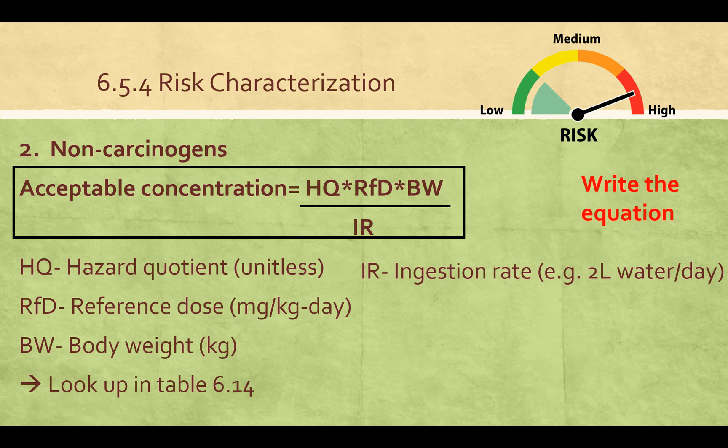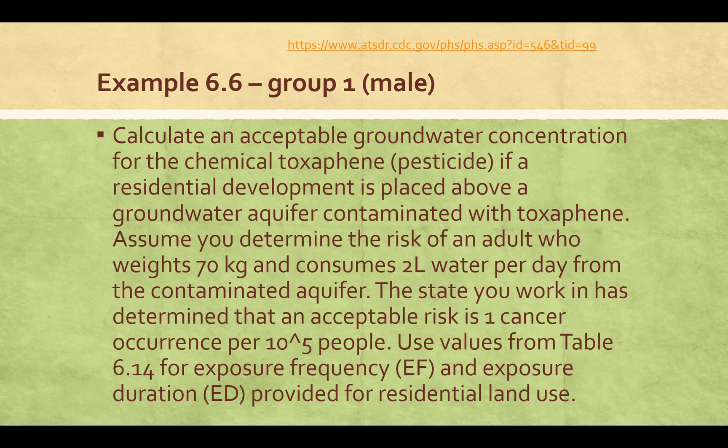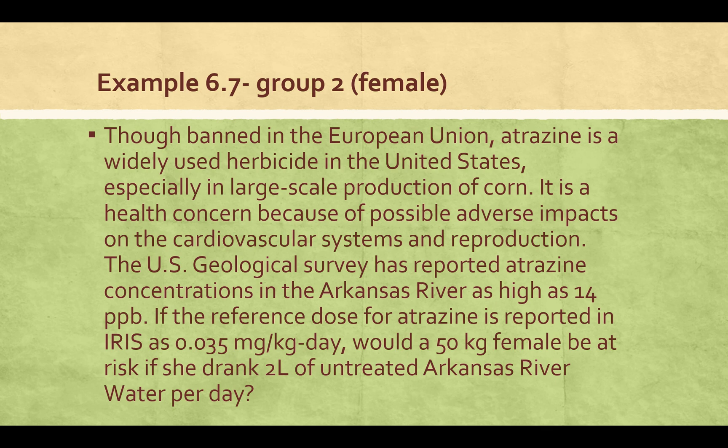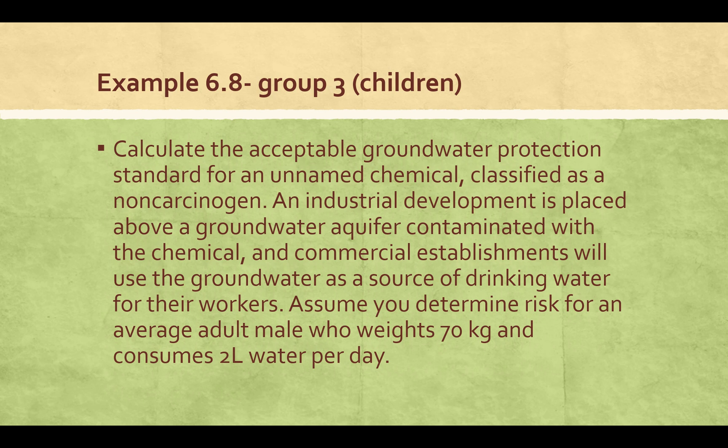Those are the equations you'll need for our lecture on Tuesday. Based on your groups from last time, we'll be going through three different example problems from the book and you'll be presenting back to the class how to solve them. Example 6.6 is for group one (male dose), example 6.7 is for group two (female), and example 6.8 is for the children's group. I'll put handouts with solutions in the file folder, but try to solve them on your own without looking at the solutions first. Let me know if you have any questions, and hopefully this video was useful.